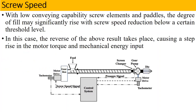With low conveying capability — screw elements and paddles — the degree of fill may significantly rise with screw speed reduction below a certain threshold level. So the screw speed will also affect your extrusion process. In case the reverse of the above results take place, it causes a step rise in the motor torque and mechanical energy. If you reduce the speed, it will ultimately affect the motor drive. As you can see in the figure, the motor drive will vary with your screw speed.